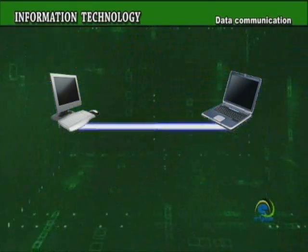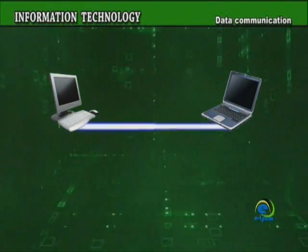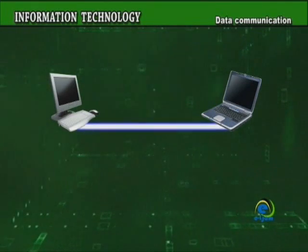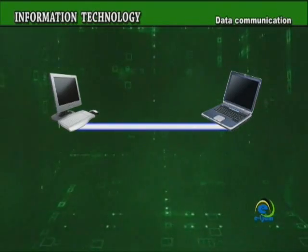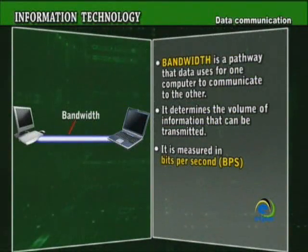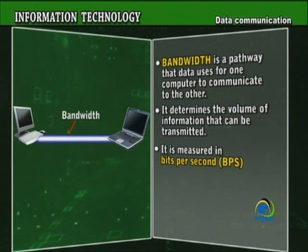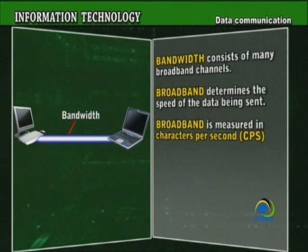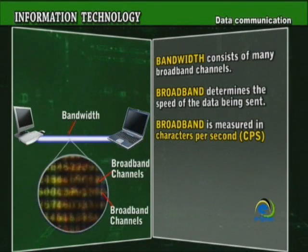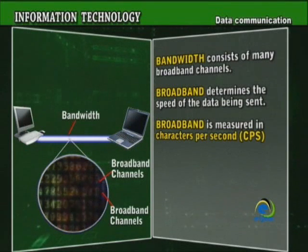The amount of data that can be communicated or sent at any time over the network is regulated by the bandwidth, which is predetermined by your Internet provider. Bandwidth is the pathway that data uses for one computer to communicate to the other. It determines the volume of information that can be transmitted, and is measured in bits per second (BPS). The bandwidth consists of many broadband channels, which determine the speed of the data being sent, often measured in characters per second (CPS).